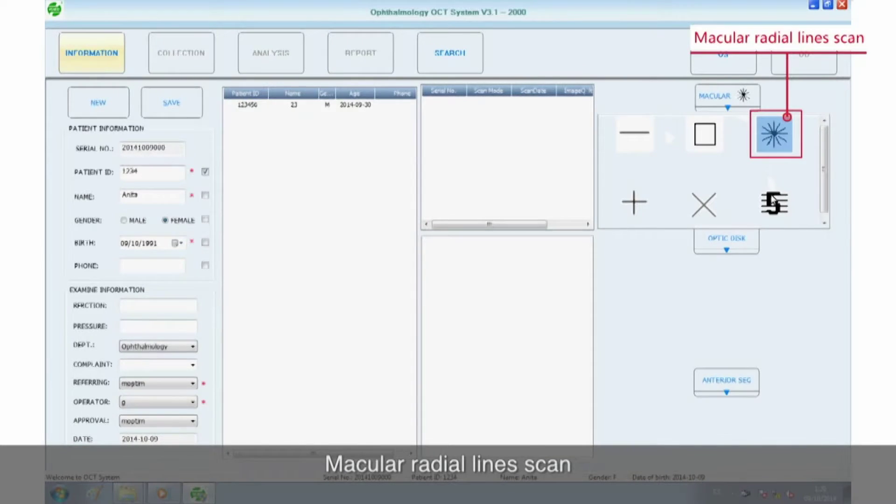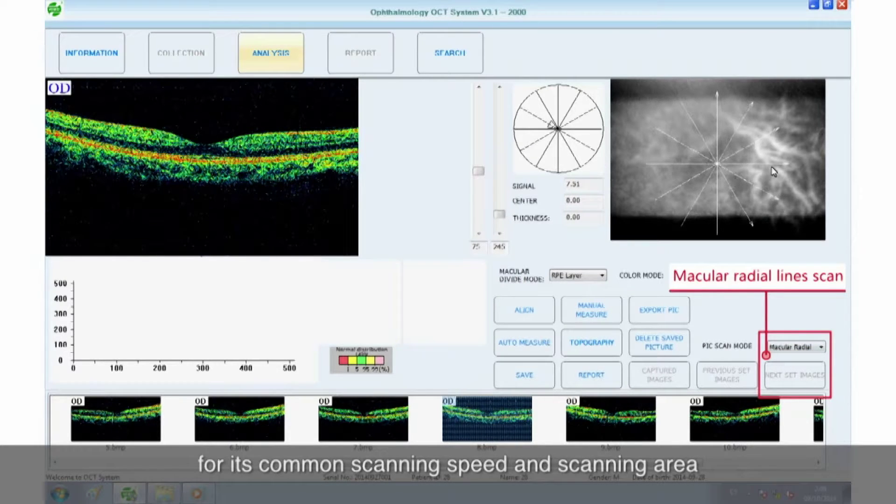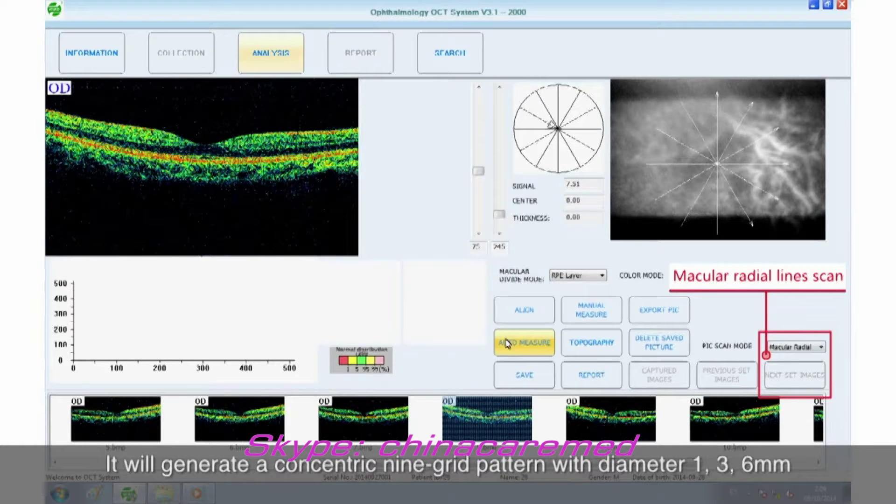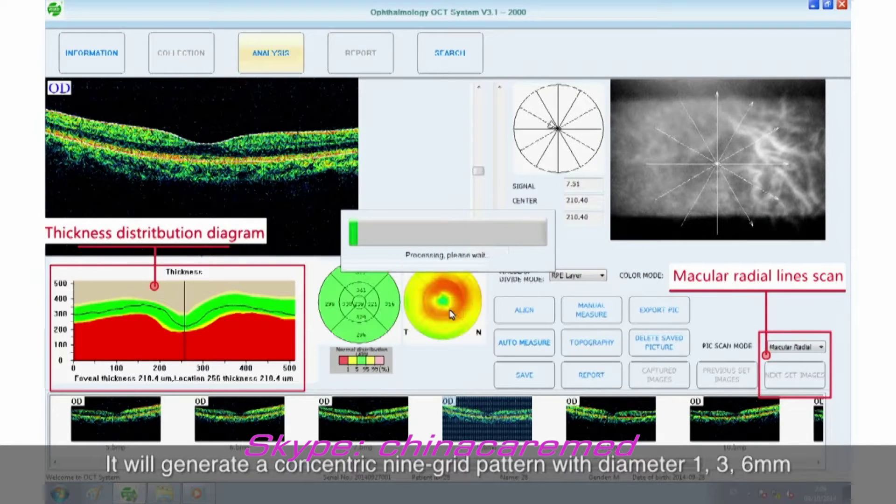Macular radial line scan. We suggest to use this mode at first time for its common scanning speed and scanning area. It will generate a concentric 9-grid pattern with diameter 1, 3, 6 millimeters, and get average thickness value and topographic map of each region.